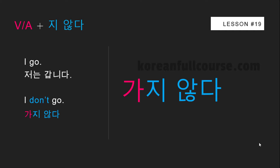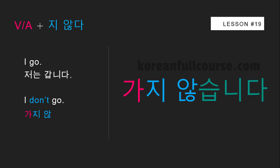But it's not a complete sentence because we don't have a sentence ending. Pause the video and think about where to attach it. 않다 is actually also a verb — an auxiliary verb that cannot be used independently. Treat 않다 as a verb: get rid of 다 and leave just the stem, then add any particle including the sentence ending. So: 가지 않습니다. Now this is a complete sentence.